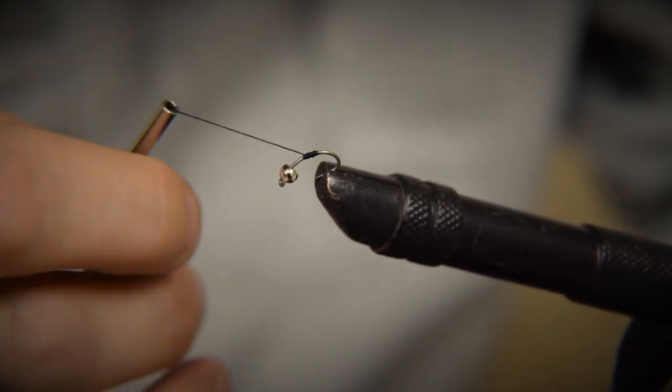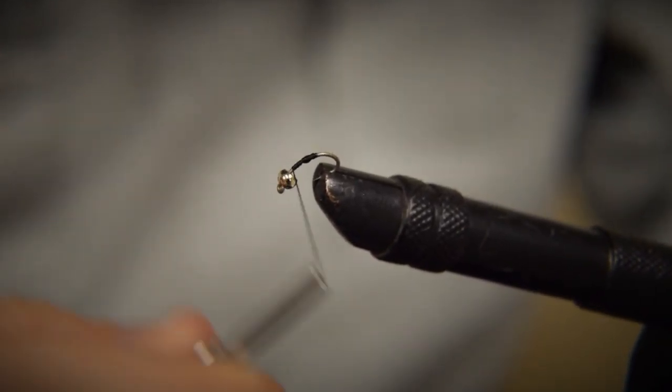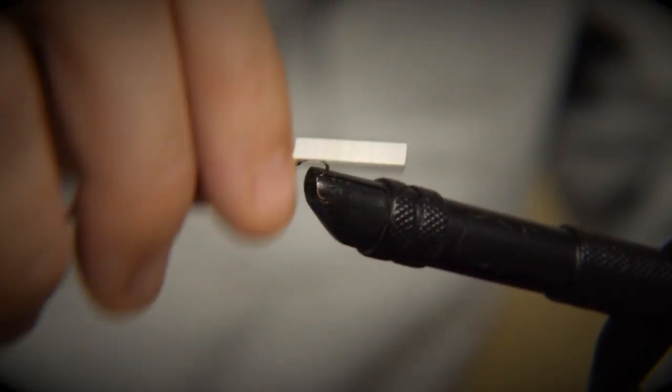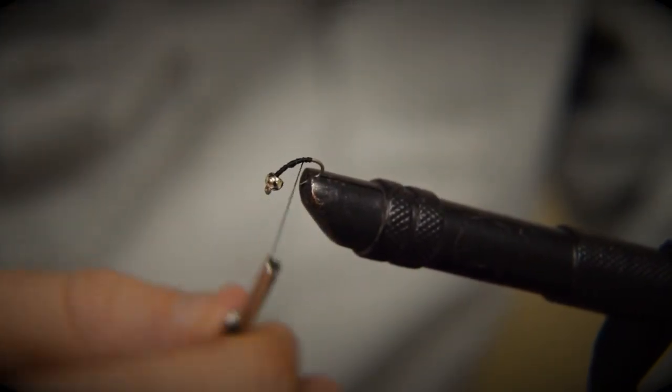The next step is we're actually going to take that thread and we're going to coat the whole hook all the way up towards the front and all the way towards the back using the thread control that we practiced and worked on.